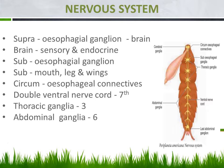The next region is the double ventral nerve cord. The ventral side means the bottom region. The double ventral nerve cord arises from the subesophageal ganglion, and from there a nerve cord leads all the way till the seventh segment of the abdominal region.